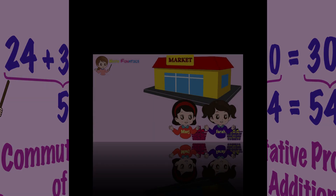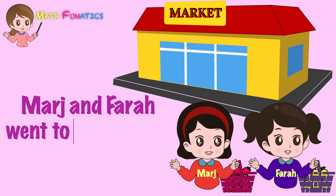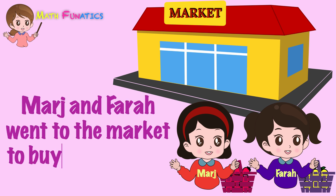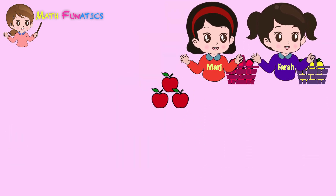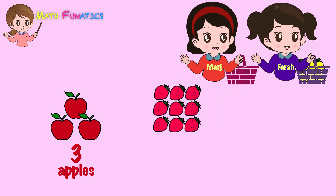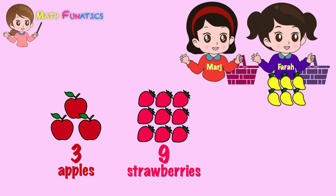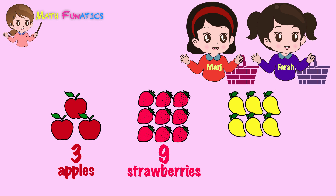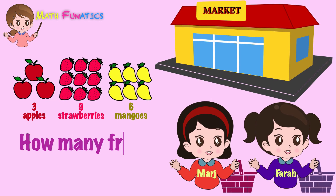Now let's analyze the next situation. Marge and Farah went to the market to buy some fruits. The fruits that they bought are 3 apples, 9 strawberries, and 6 mangoes. How many fruits did they buy in all?